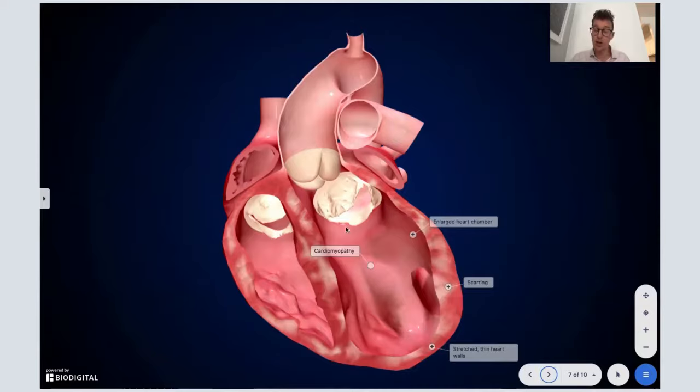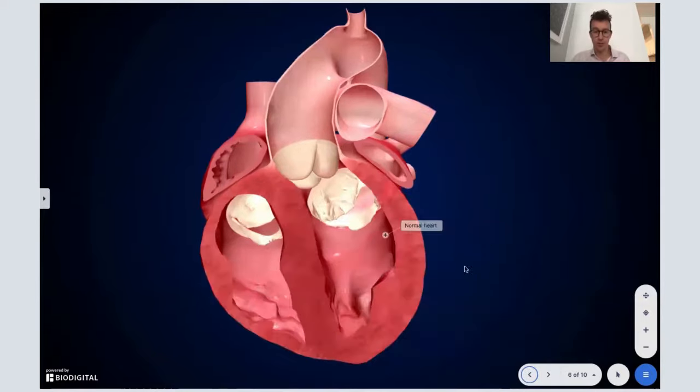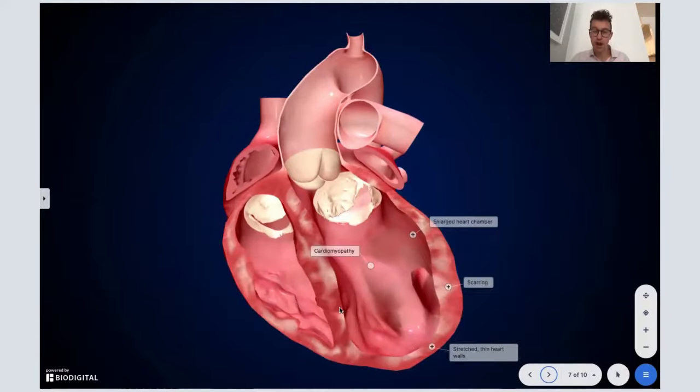So here you'll see you have an enlarged heart chamber. If you go back to the normal size, you can see it's smaller, and you can see that the myocardium itself has become stretched, and it's become scarred, and that can actually cause issues with your heart pumping, such as heart failure, and this is what we see here in the next chapter.